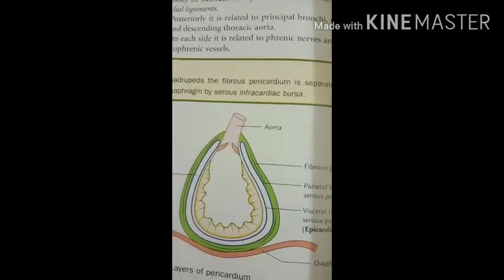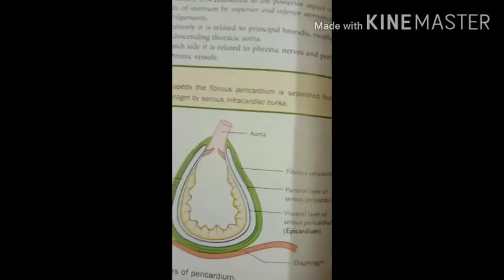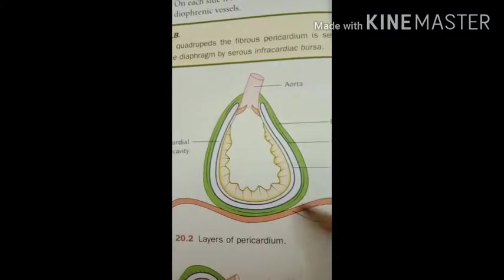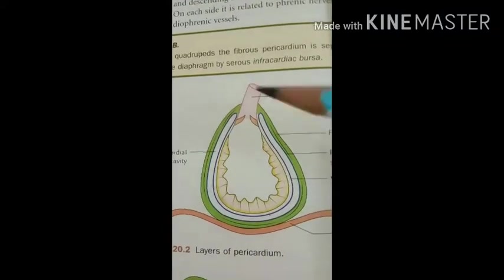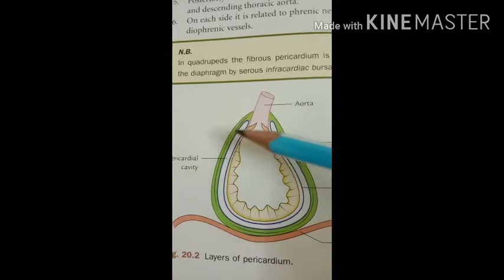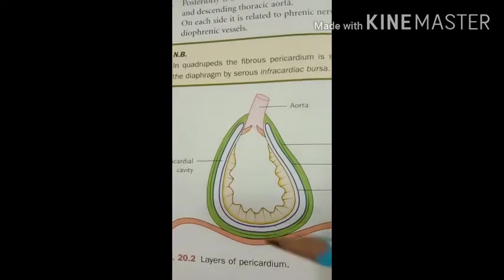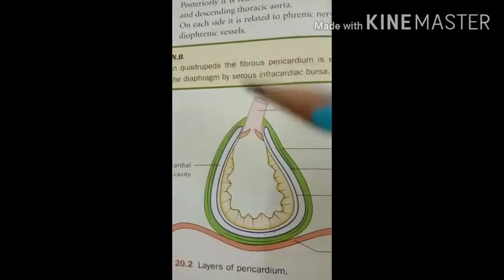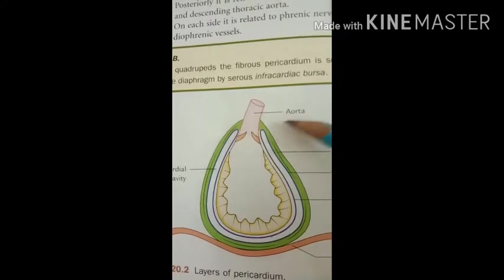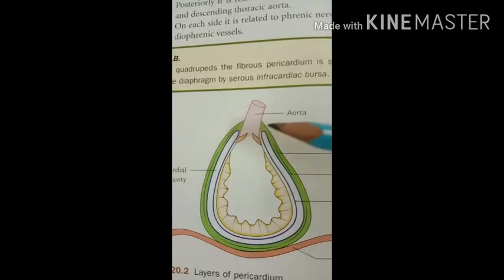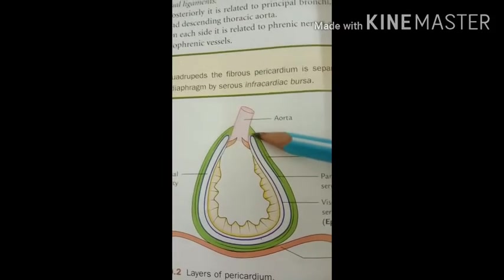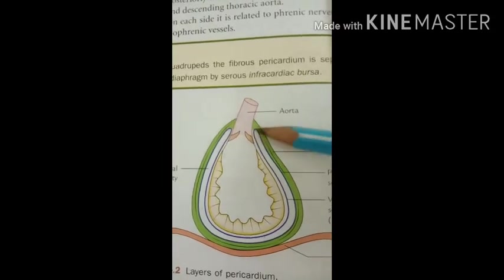The fibrous pericardium forms a conical sac made of fibrous tissue, with the parietal layer of the serous pericardium present on its deep surface and attached to it. The apex of the pericardium is blunt, lies at the level of the sternal angle, and is fused with the root of the great vessels — specifically the aorta — at the level of the sternal angle.